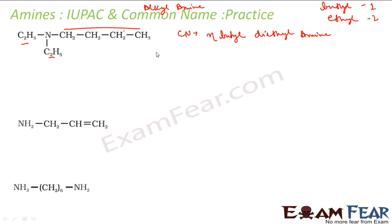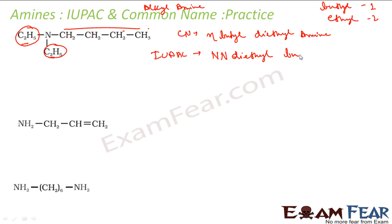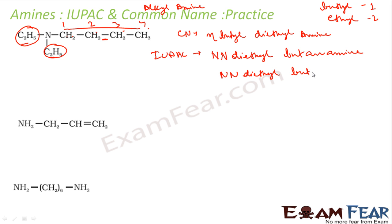Let us now do the IUPAC name. For the IUPAC name, we take the longest chain — this is my longest chain — and then these two groups will be my substituent groups. At nitrogen I have two ethyl groups, so I will use N,N-diethyl. The longest chain has four carbons, so it is butyl, all single bond, -ane, then -amine. Had there been a double bond at position 2, the numbering would be 1-2-3-4, and the name would be N,N-diethylbut-2-en-amine.